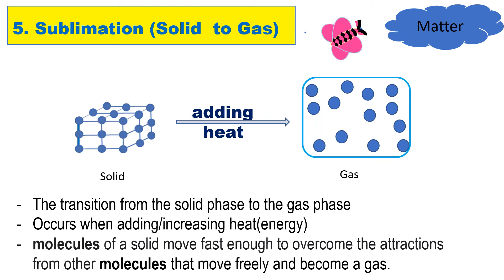The fifth phase change is sublimation. This is the transition from solid phase to gas phase. The requirement is adding heat. This process occurs when there is an increase in heat or energy. What happens to the molecules of solid is they move faster and that movement makes enough to overcome the attractions from other molecules that move freely and become a gas.